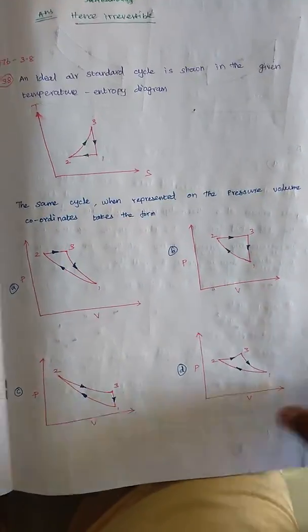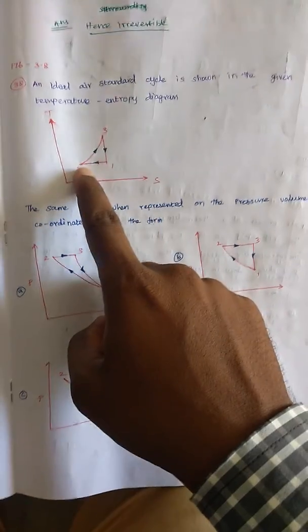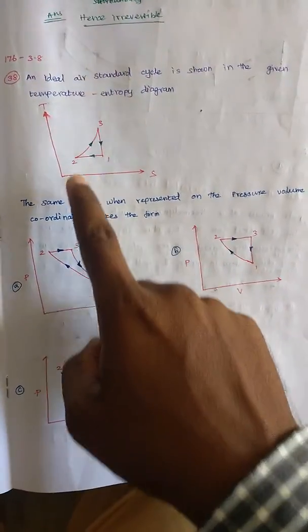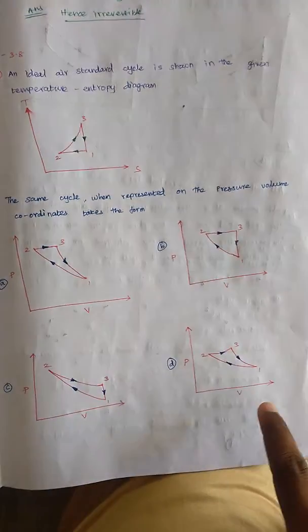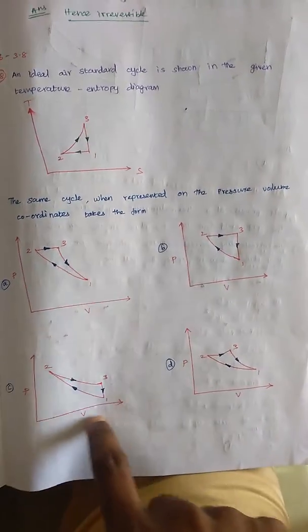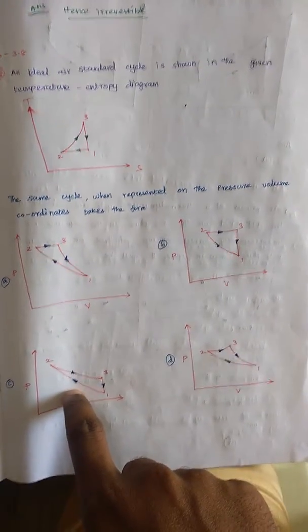Then now I am going to see this one. Here 1-2-2 is straight line. Then the PV diagram should be curve. Here all four diagrams are having curved line. So we are unable to locate anything.